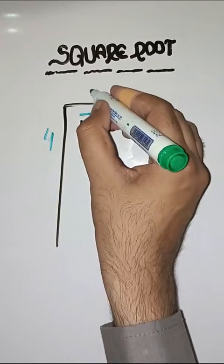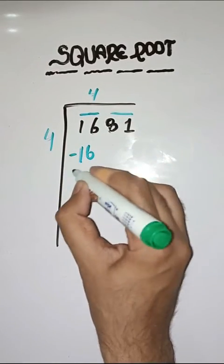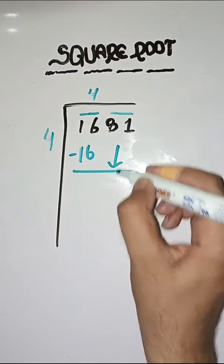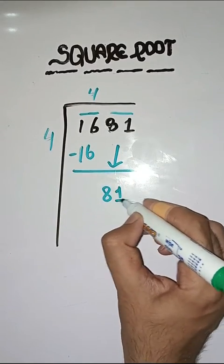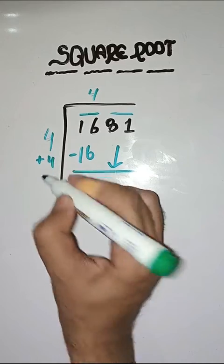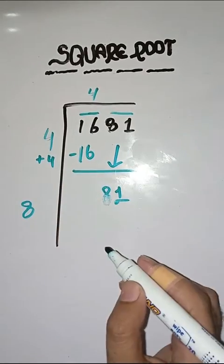Minus karenge. Humne passage a zero. Next pair 81 is equal to 8. Now we will take a number 1.